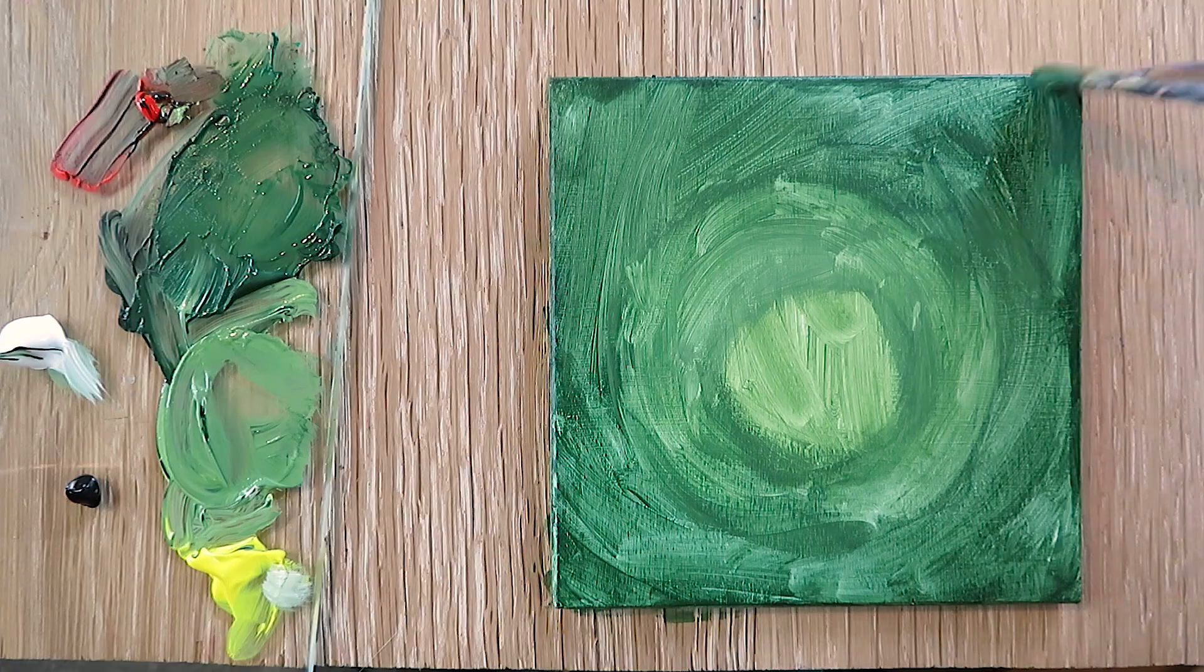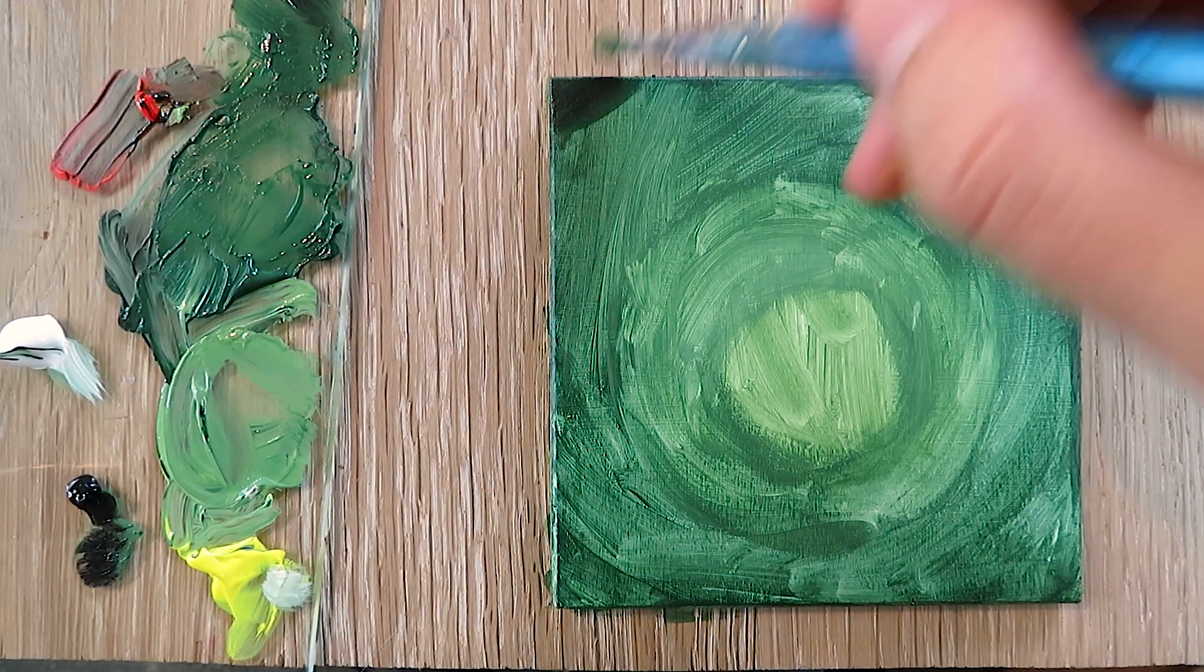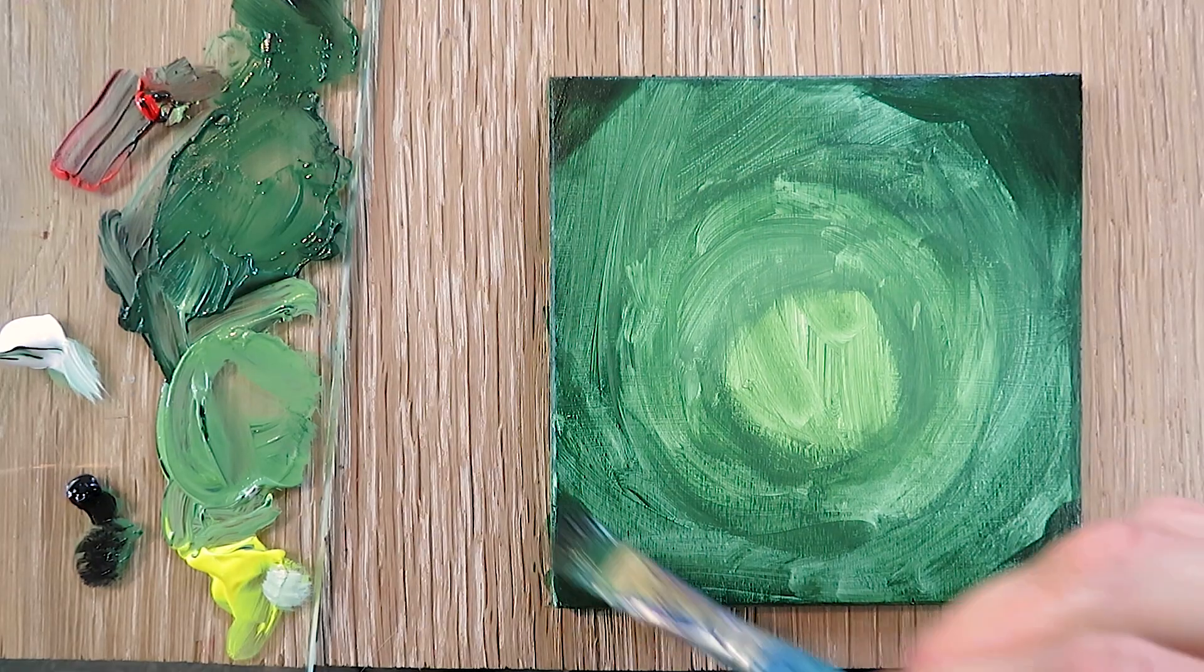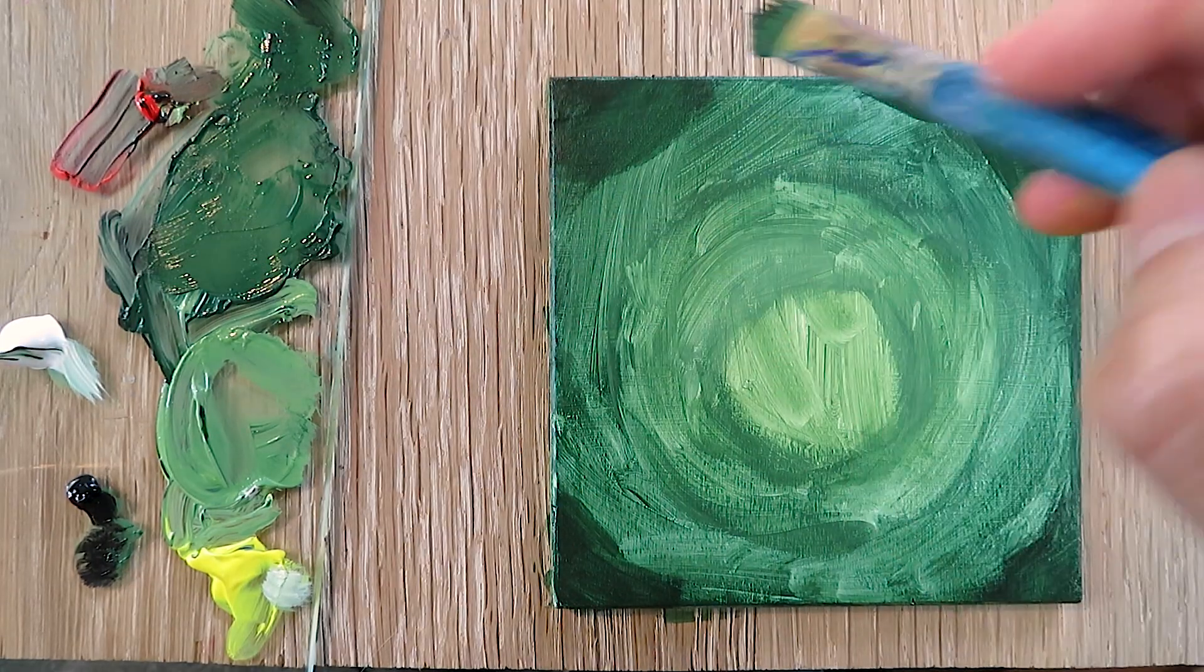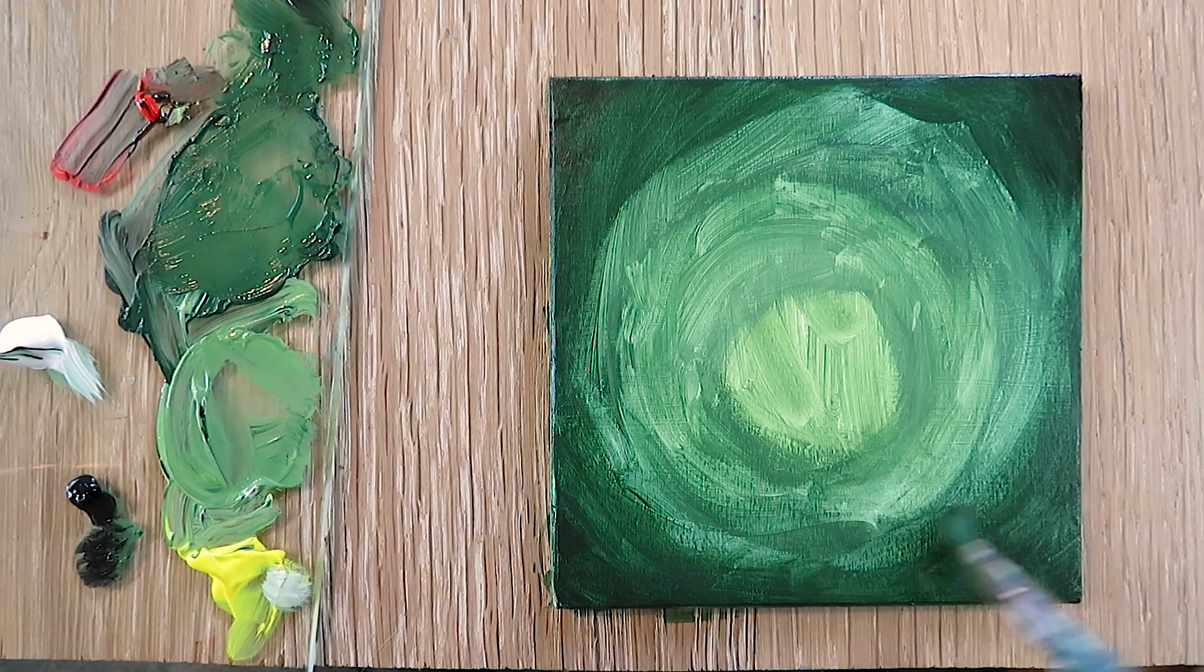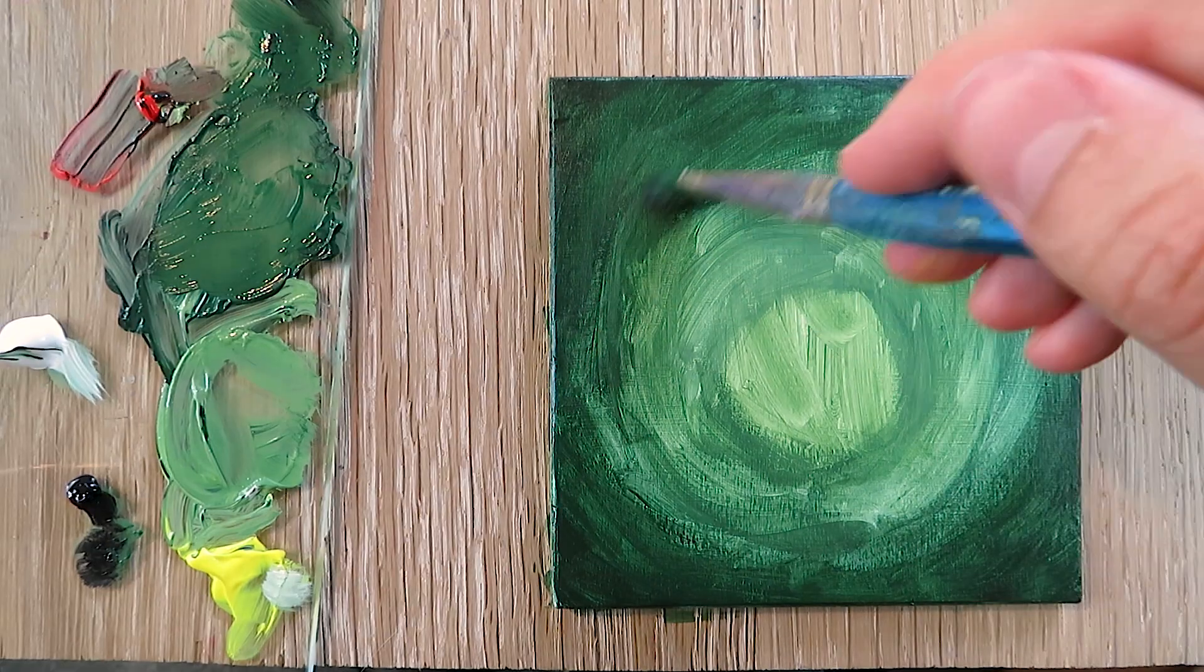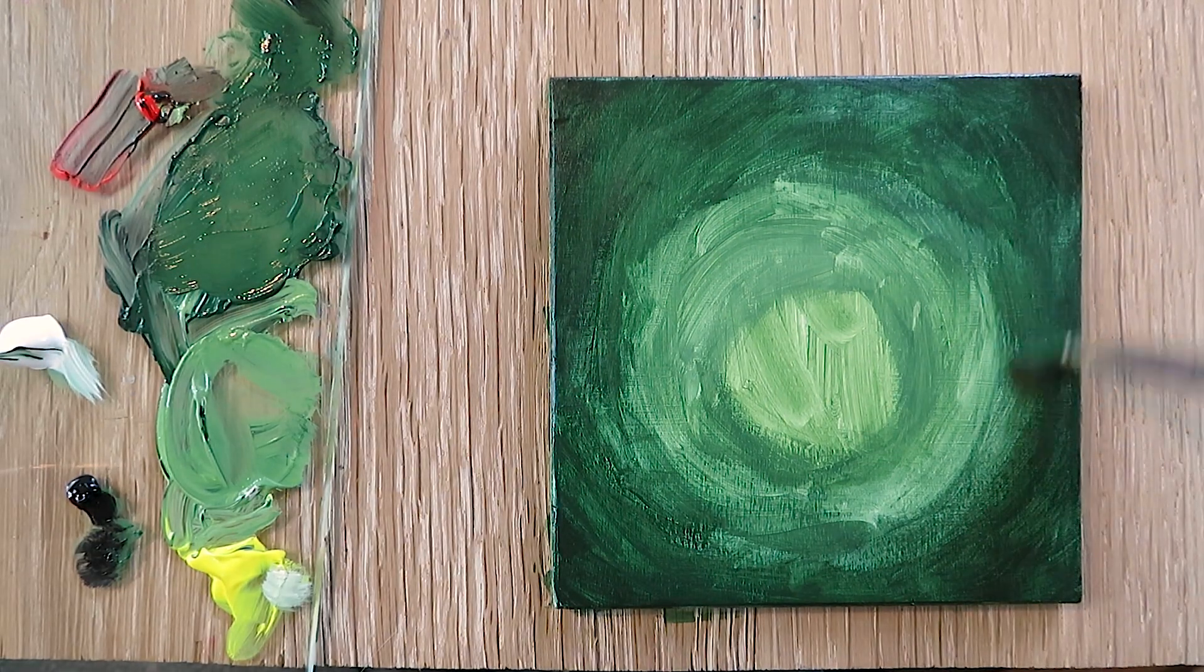As you can see, the white is still shining through a lot, so I'll quickly go over this layer again. I'll make the edges even darker by mixing a little bit black to the green, and blend it nicely with only the green color, then the light green as I get closer to the middle. That looks quite good.